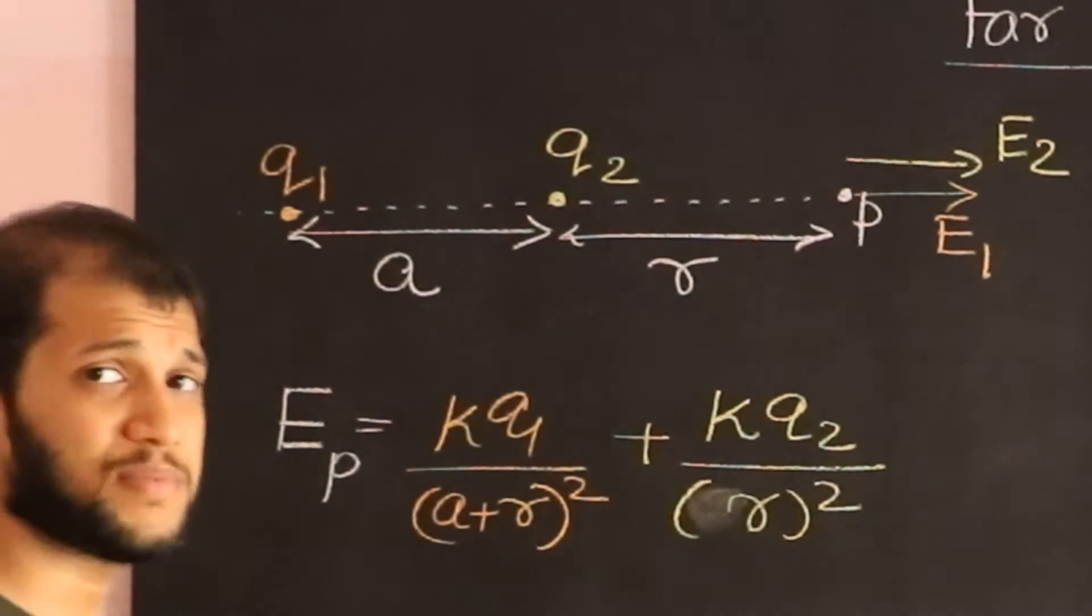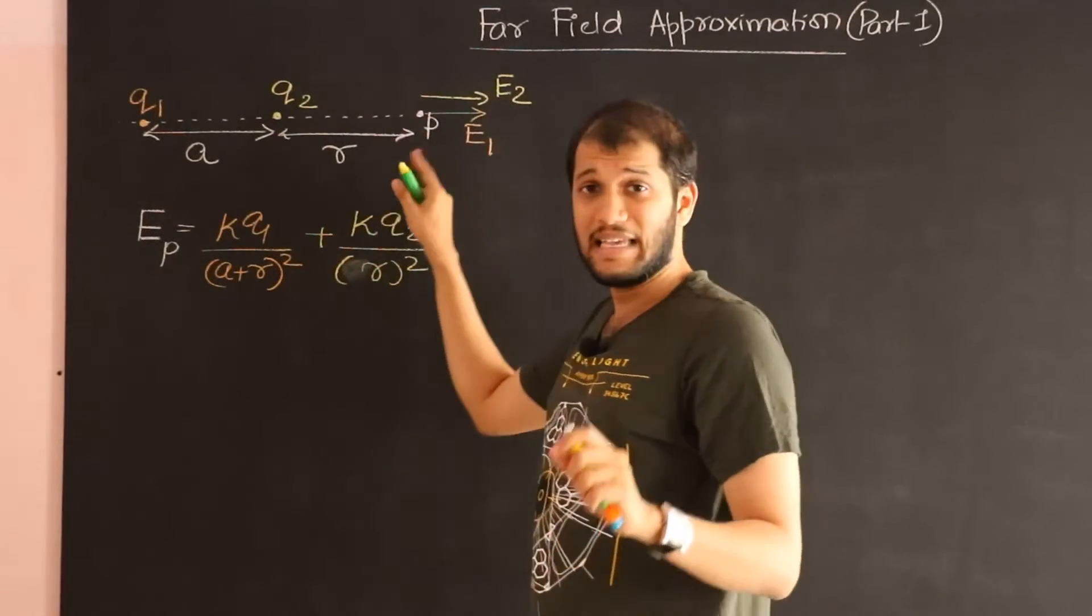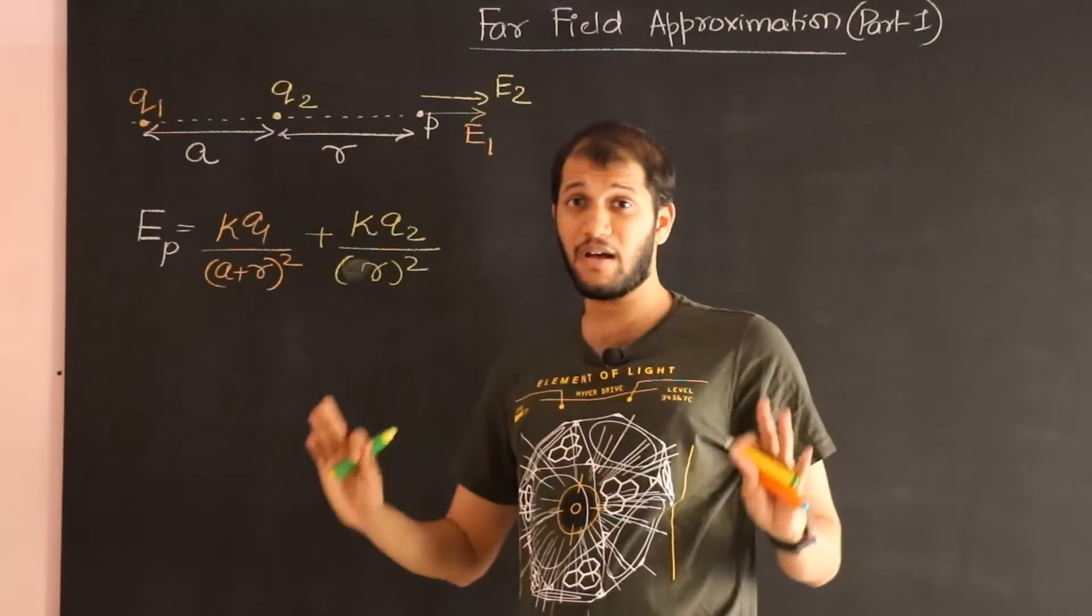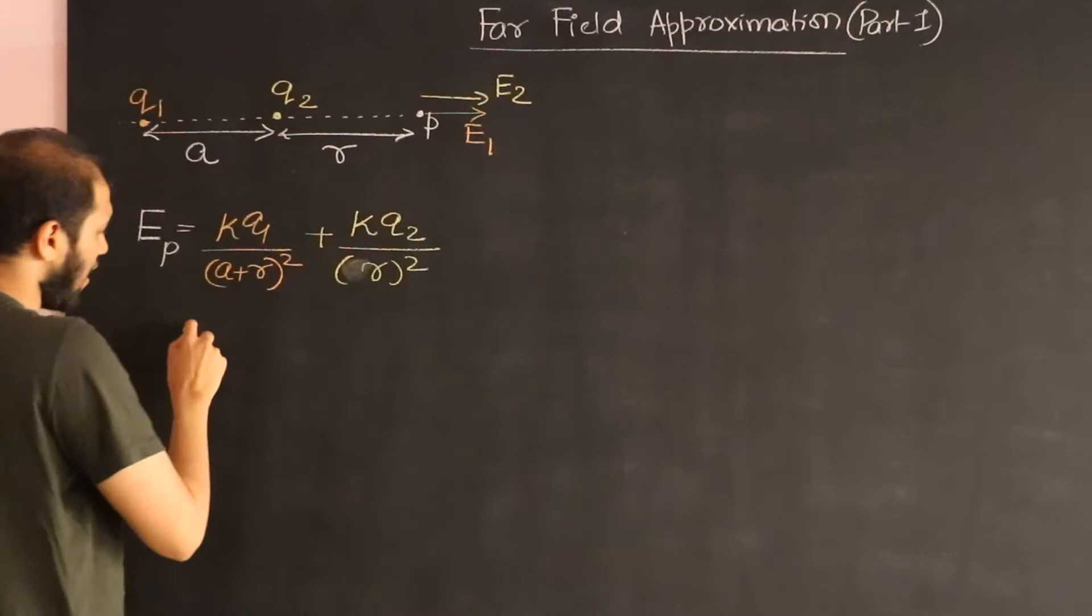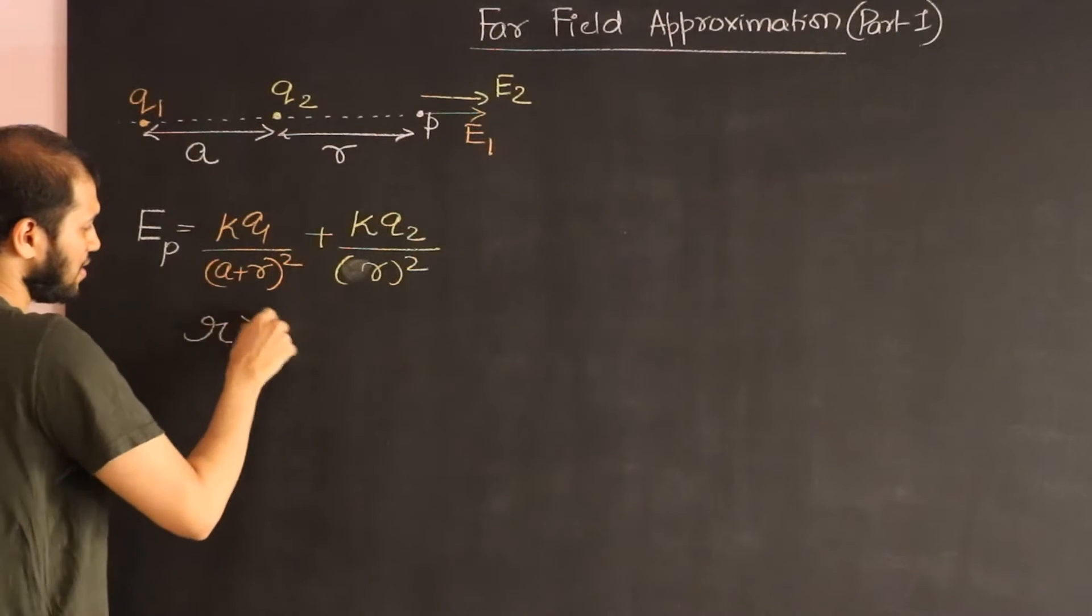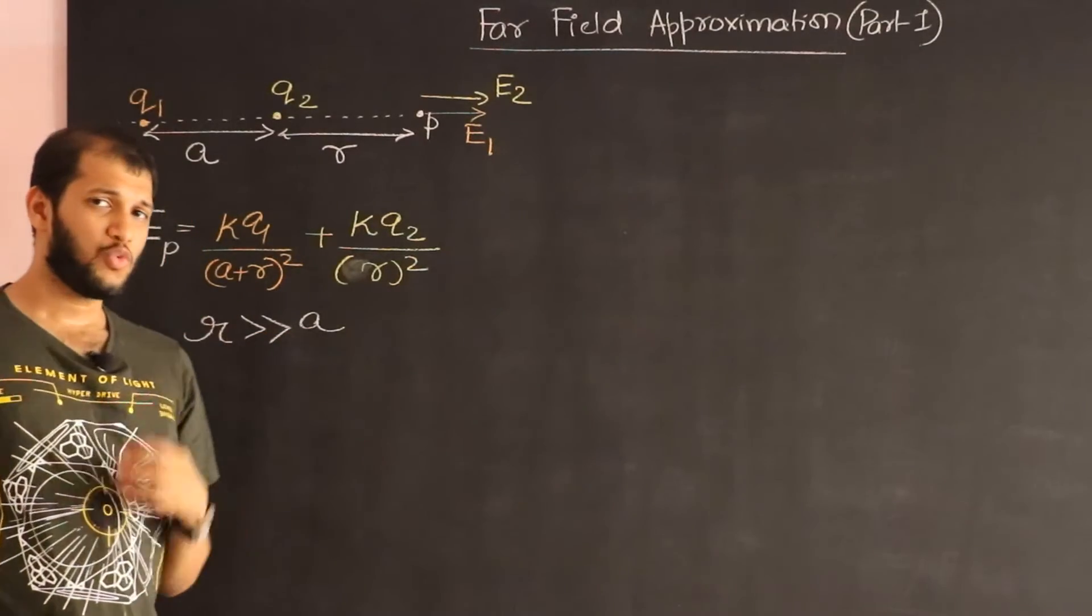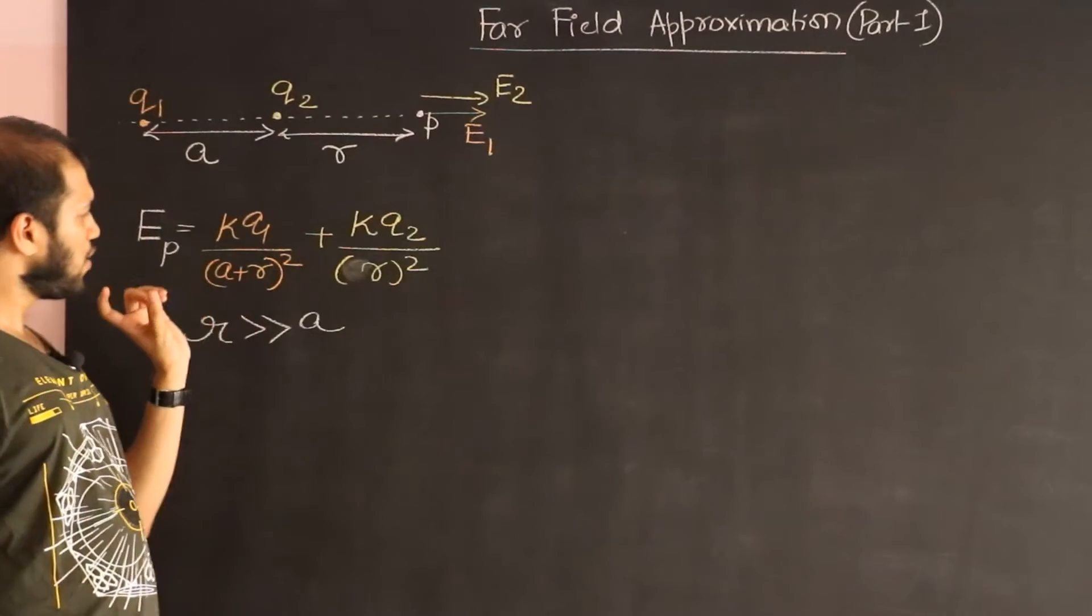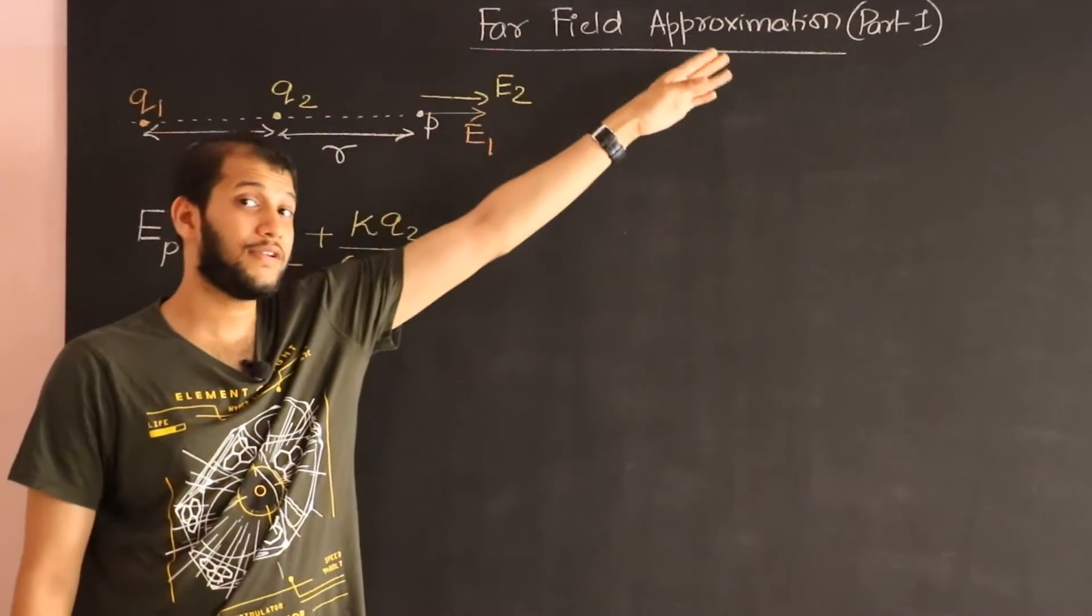Now here is the question. What if we assume that point P is far away from this charge configuration? In other words, what if R is much bigger than a? Under this assumption we can modify this formula and we can do some approximation. That's the whole idea behind far field approximation. We take a point which we are interested in far away from our charge configuration.